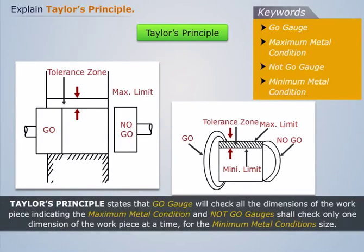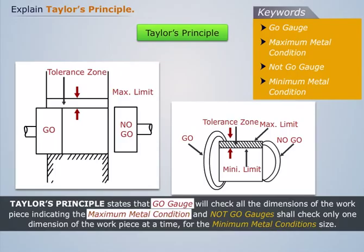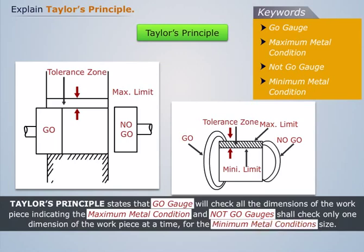Taylor's principle states that the Go gauge will check all the dimensions of the workpiece, indicating the maximum metal condition. Not-Go gauges shall check only one dimension of the workpiece at a time for the minimum metal condition size.